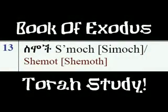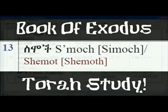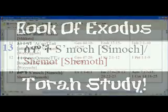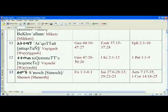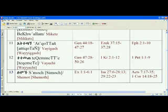The Torah reading — the Orit Zemusei — is from Exodus chapter 1 verse 1 to Exodus chapter 6 verse 1. The Haftarat reading is Isaiah chapter 27 verses 6 to Isaiah chapter 28 verse 13, as well as Isaiah chapter 29 verses 22 to 23. From the New Covenant — Acts of the Apostles chapter 7 verses 17 to 35.